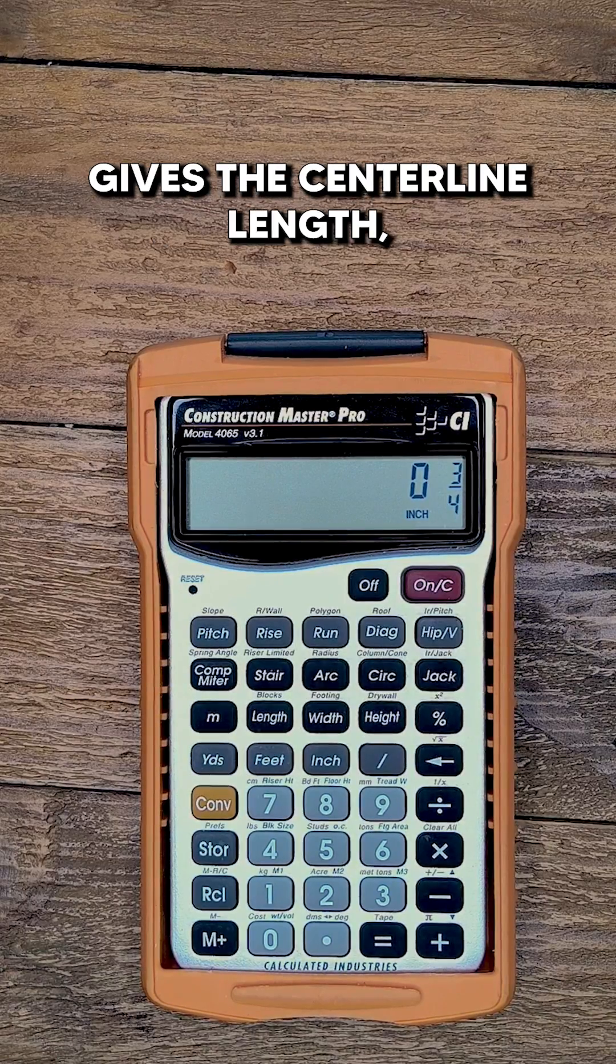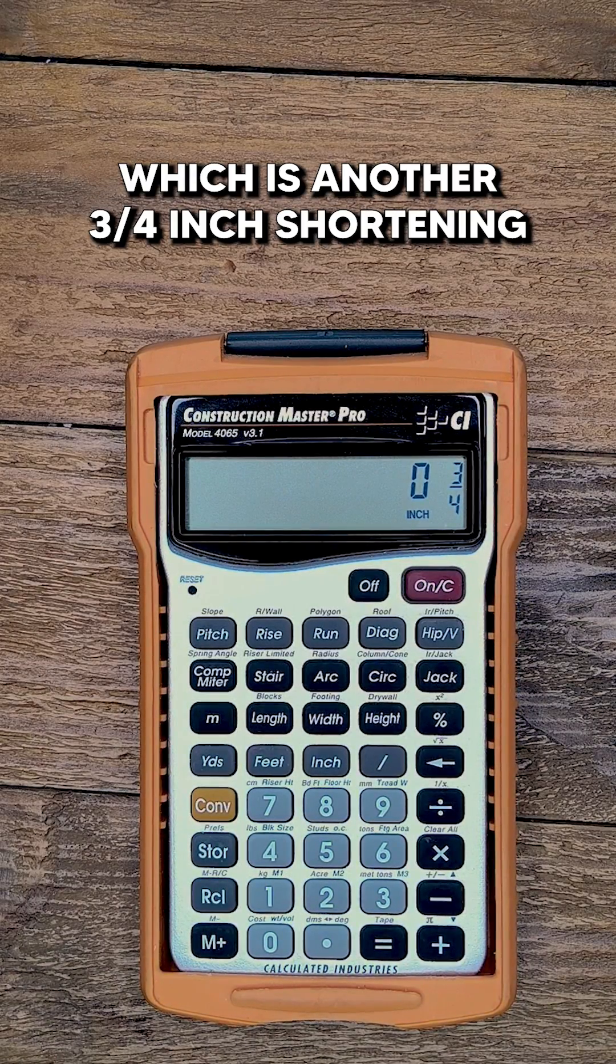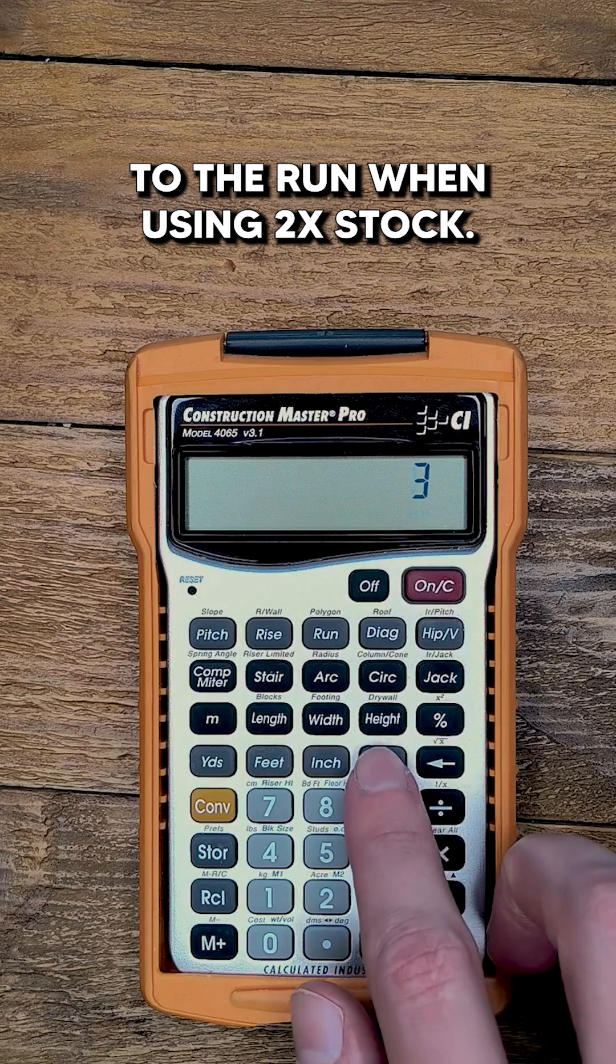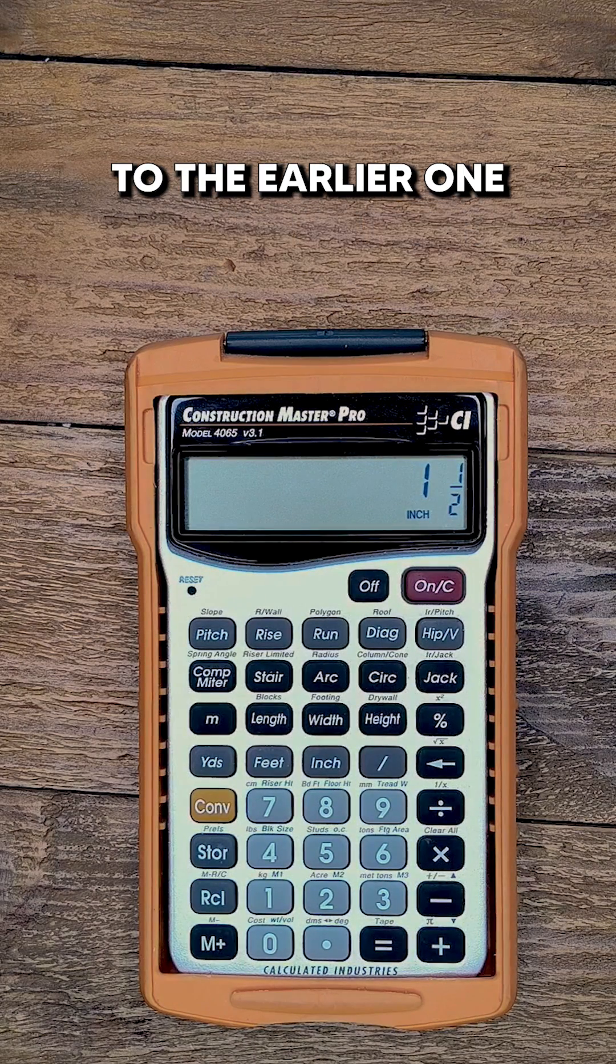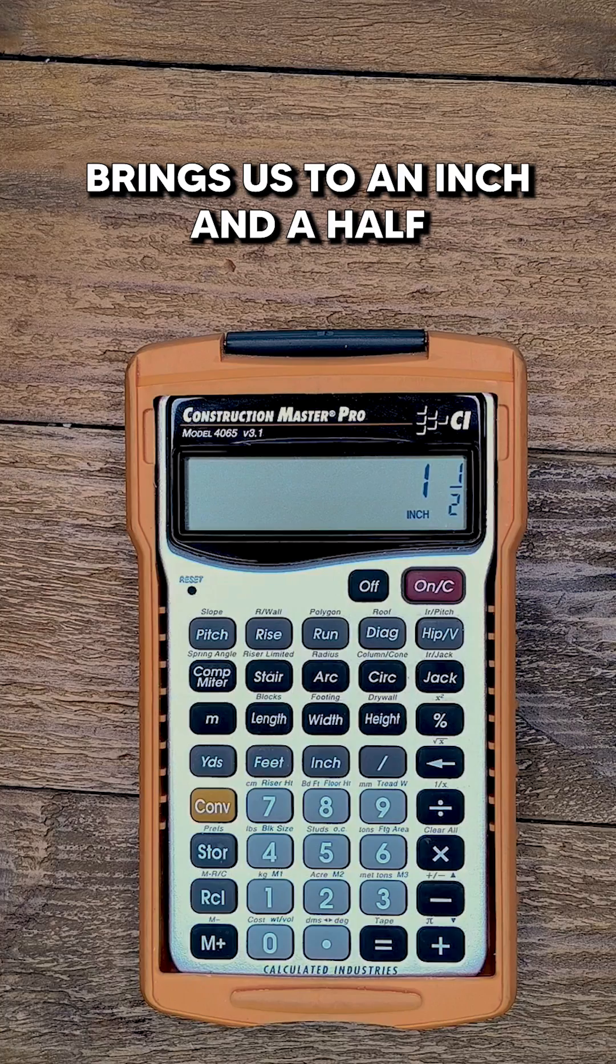but the calculator gives the centerline length, which is another 3 quarters inch shortening to the run when using 2x stock. So adding that 3 quarters of an inch to the earlier one brings us to an inch and a half.